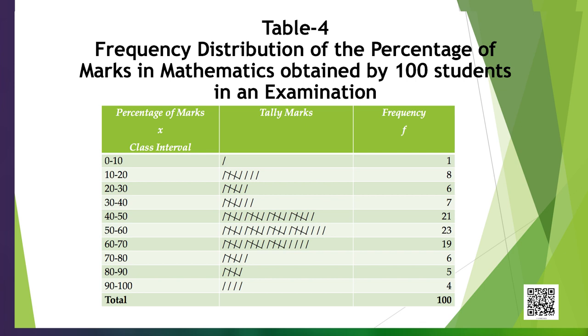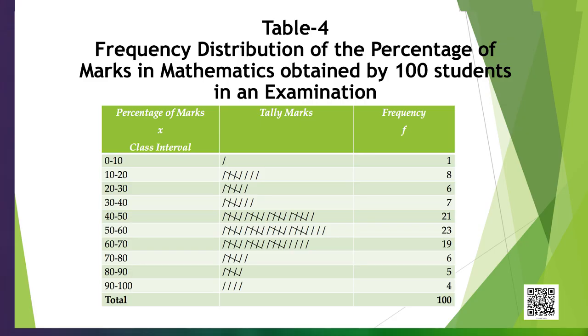Suppose we choose 10 classes such as 0 to 10, 10 to 20, up to 90 to 100. All class intervals have the same width of 10, and the upper class limits are equal to the lower limits of the successive class intervals. We use the working rule that the upper limits of class intervals are excluded but lower limits are included. Thus, if a student gets marks equal to the upper limit of some class interval, we classify them in the next class. Look at Table 4 on the screen where the frequency distribution is shown, with counting done by placing tally marks against various class intervals.